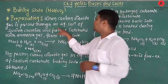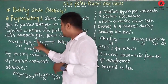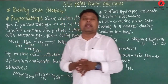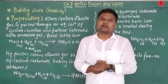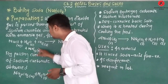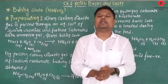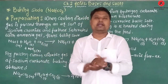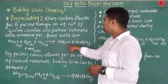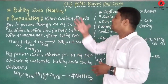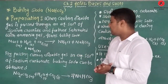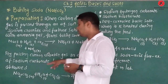First: when carbon dioxide gas is passed through an aqueous solution of sodium chloride, saturated with ammonia (NH₃), it forms sodium hydrogen carbonate and sodium chloride. Second preparation: by passing carbon dioxide gas through an aqueous solution of sodium carbonate, sodium hydrogen carbonate is also obtained.